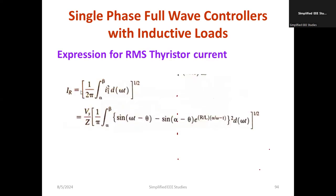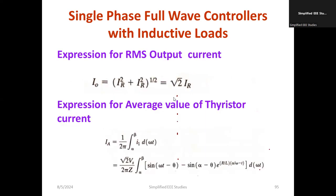Similarly, the RMS thyristor current can be computed using the formula: IR equals the square root of (1 divided by 2pi) times the integral from alpha to beta of I1-squared d(omega-t). The range is alpha to beta because that is the conduction range. The RMS output current is the square root of IR-squared plus IR-squared, which equals square root of 2 times IR.